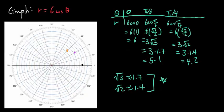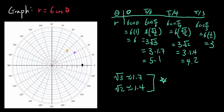Now let's try pi over 3. R is going to be 6 times cosine of pi over 3. Cosine of pi over 3 is 1/2, so 6 times 1/2 is going to be 3. So when theta is pi over 3, you're going to go 3 forward, and that's going to be right there.